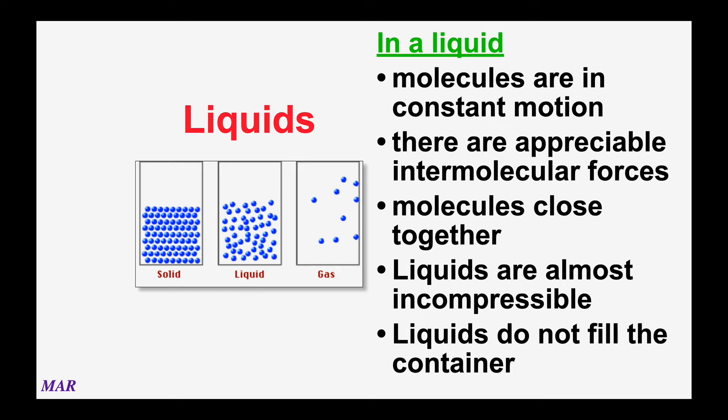Let's change gears and talk about liquids. In a liquid, there are special constraints — molecules are constantly moving around and there are pretty good intermolecular forces. Remember, gases move around a lot but have no intermolecular forces. Compared to gases, liquid molecules are pretty close together, making liquids almost impossible to compress. You can compress gases from three liters down to a milliliter, but liquids are very hard to do that. Also, liquids don't fill the container — you pour a liquid in and it takes up whatever volume it needs, unlike a gas which completely fills its container.